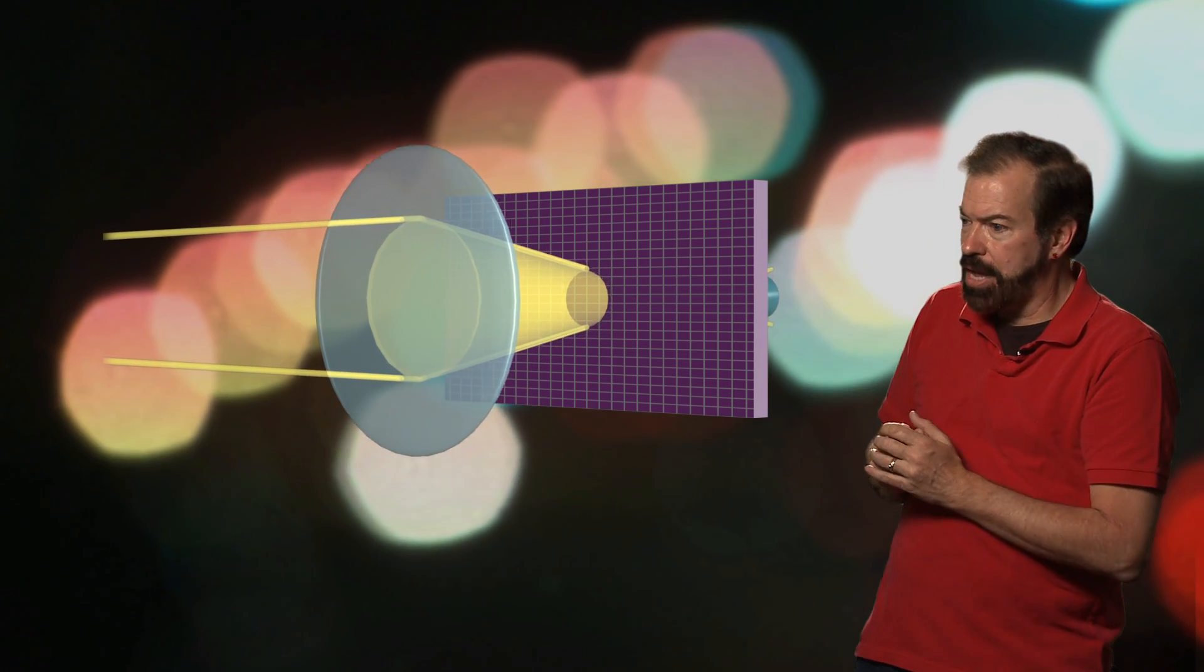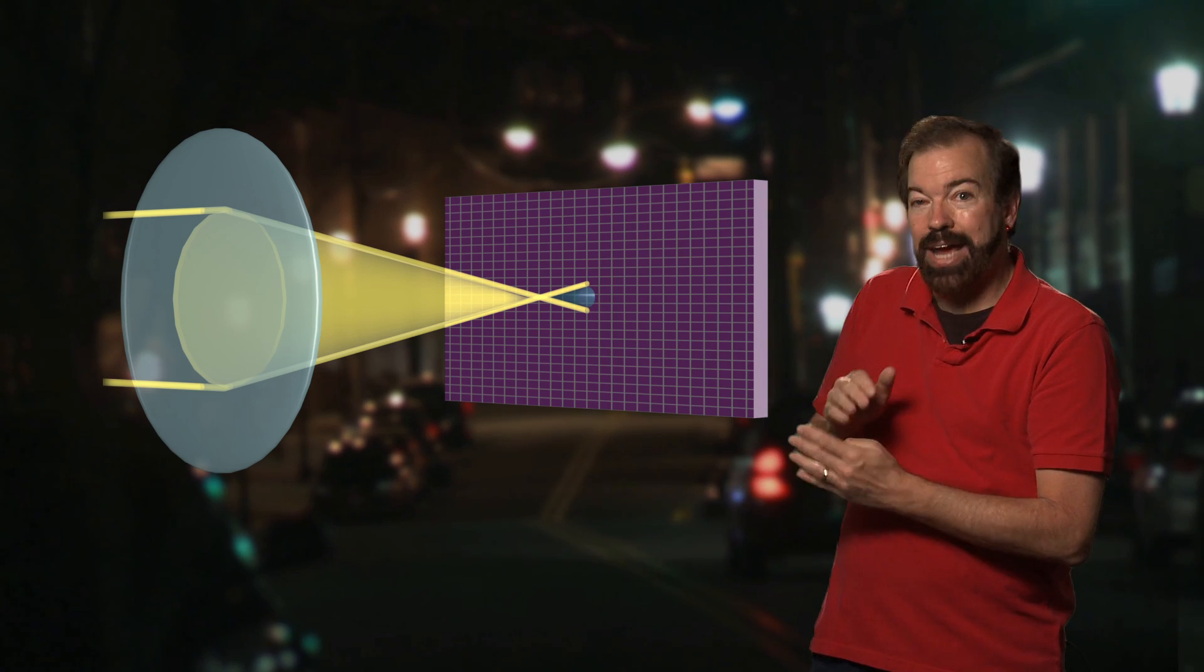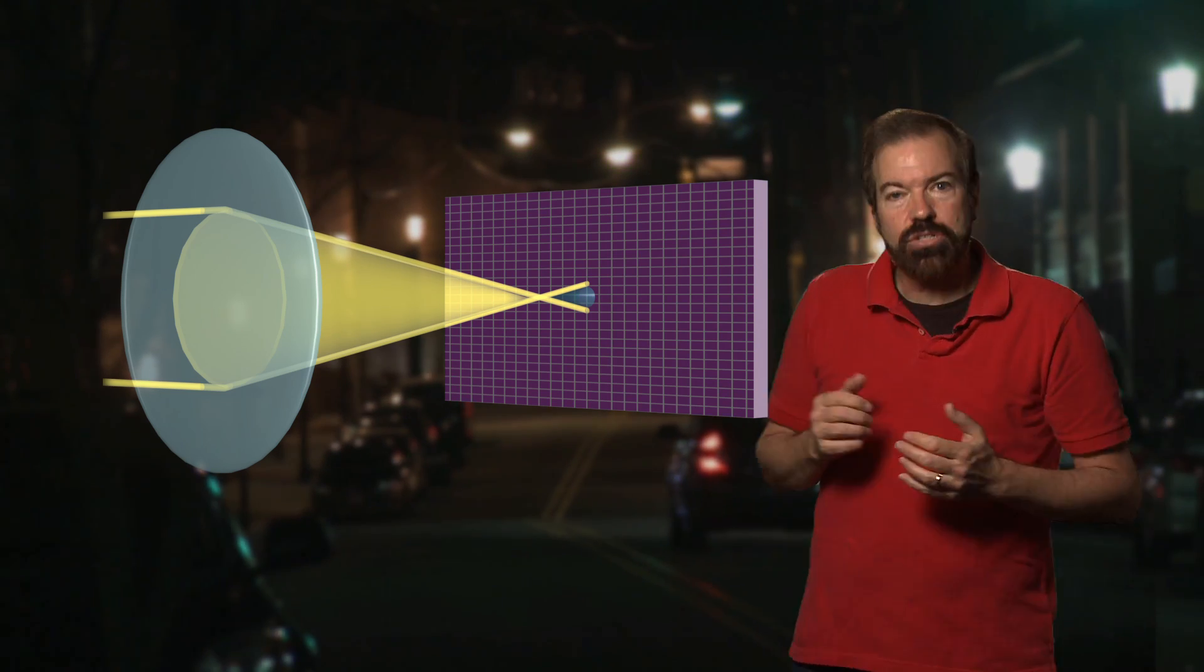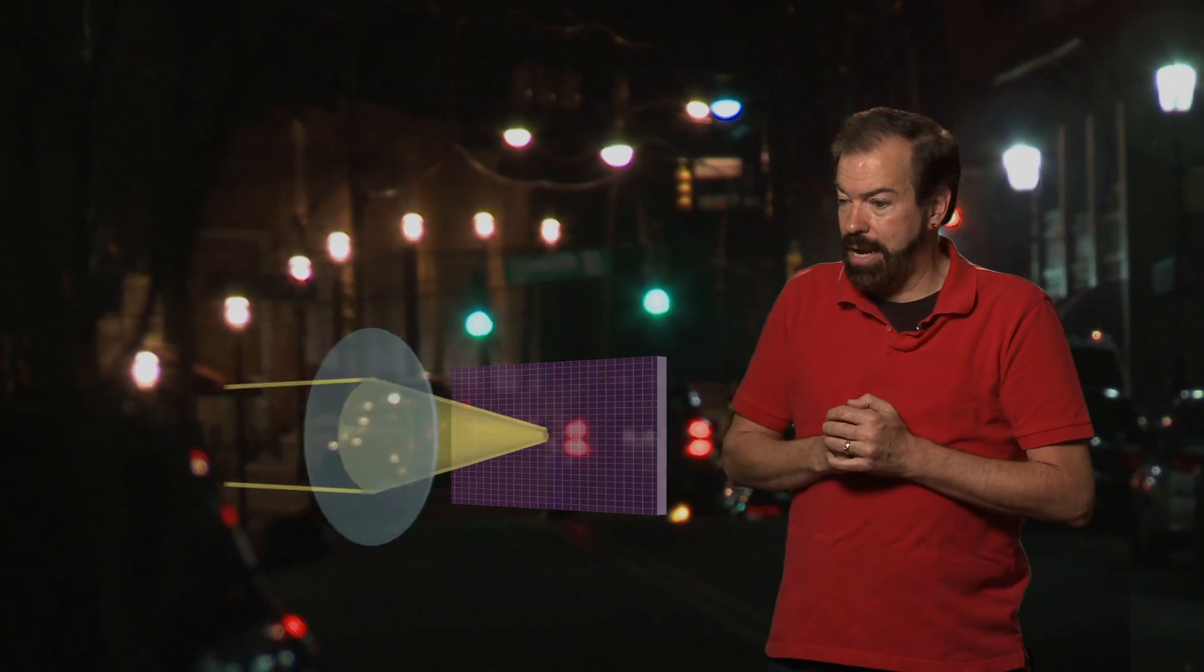When you rack back the other direction, you pass through the focal point and now you're in the part of the cone where the light diverges. You get a circle again and the whole thing looks on screen very much like what you're seeing happening behind me right now.